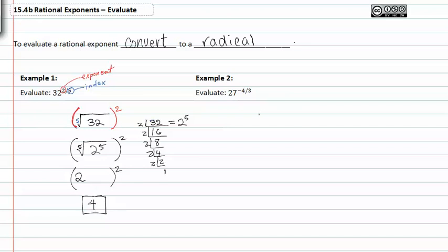If I'm asked to evaluate 27 raised to the negative 4/3, once again I know that this is my exponent, and the 3, or the denominator, is my index.